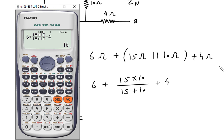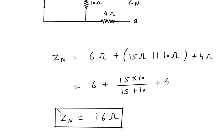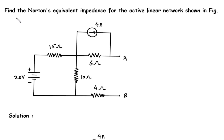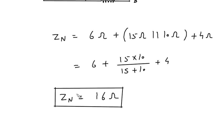This evaluates to 16. Therefore, Zn is equal to 16 ohm. So the Norton's equivalent impedance for the active linear network shown in the figure is Zn = 16 ohm.